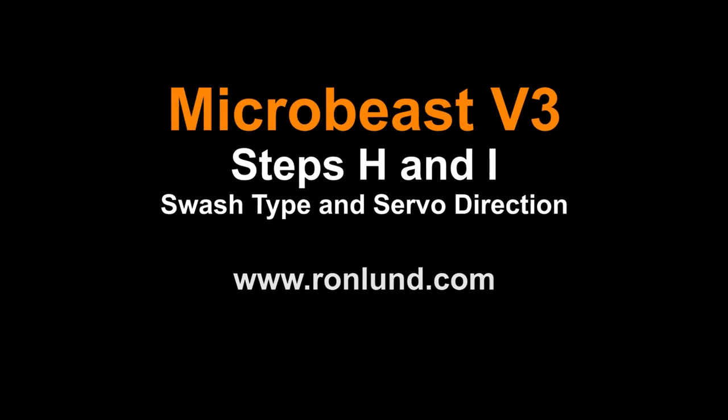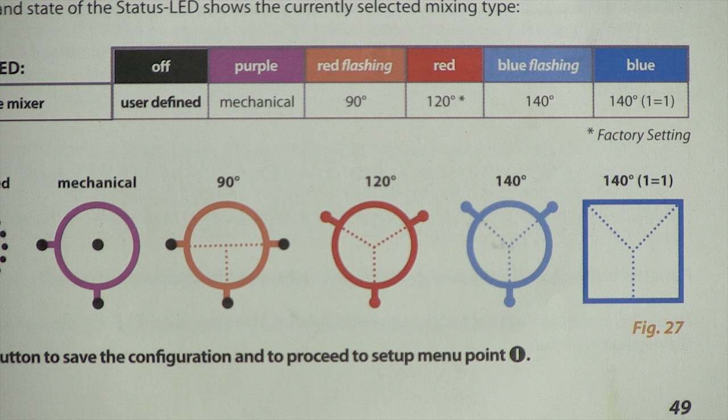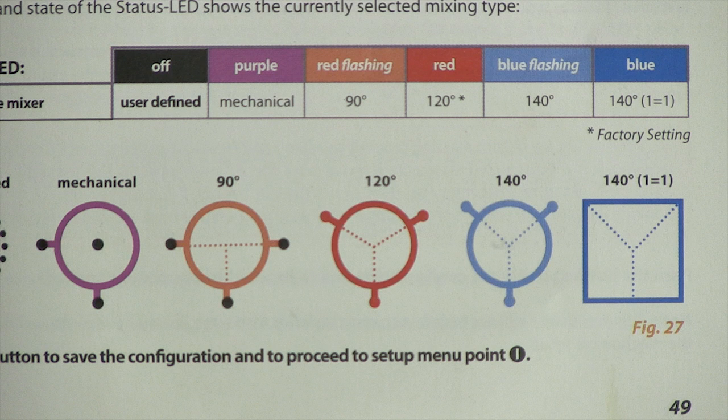Welcome to Microbeast version 3 steps H and I. Let's take a look at the manual. On page 49 you'll see all the different swash types. In step H we're going to tell the Microbeast what type you have. Since most of us use a 120-degree swash, that's what we'll go for.